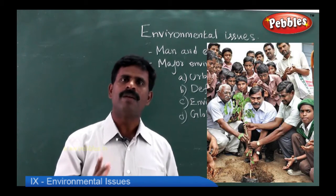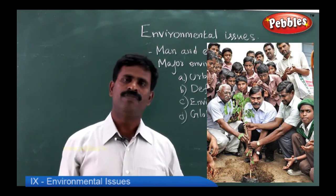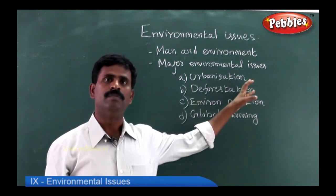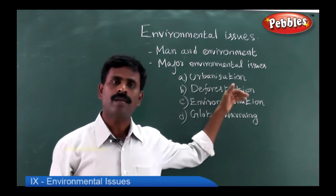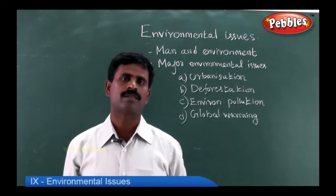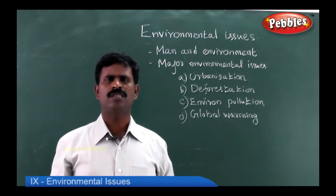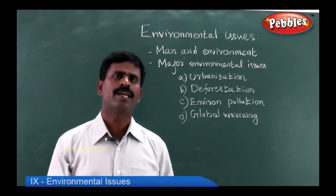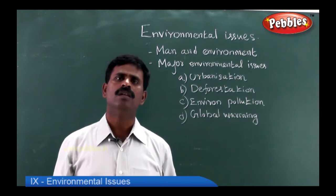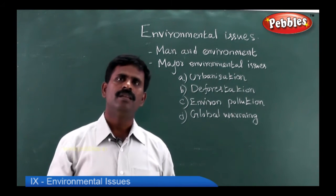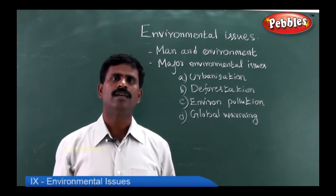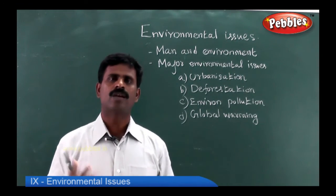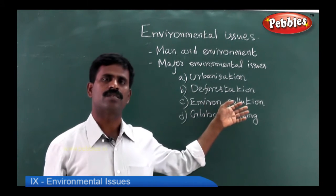Deforestation is a major concern for all of us. We can easily rectify it by afforestation. Deforestation has both long-term and short-term impact. It is the major cause for today's shortage of rainfall — the monsoons fail, people run out of water, and people have no source of livelihood in agricultural fields because of deforestation.